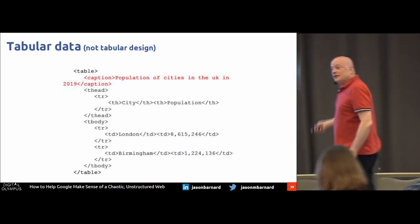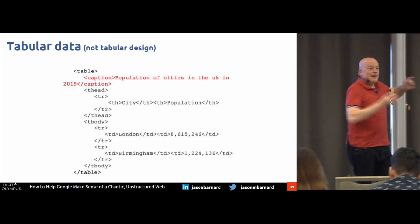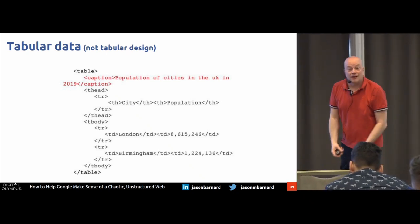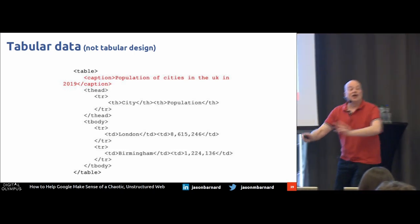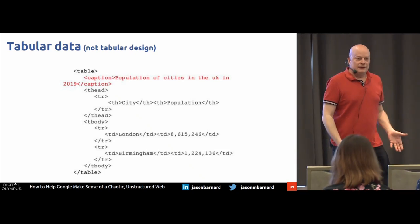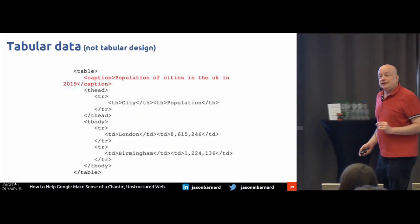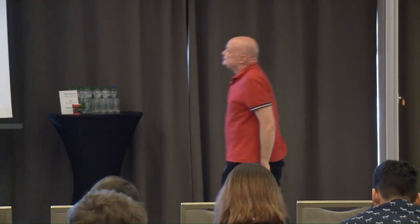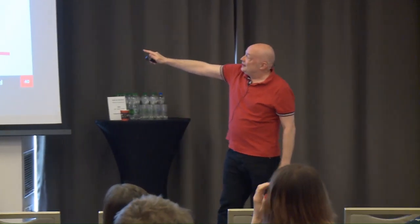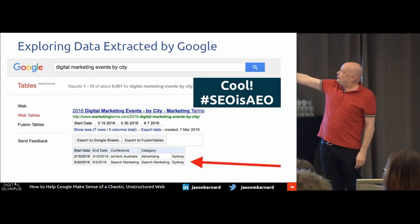Google had to develop a system to throw design tables to one side because they weren't structured data. So if you have tables on your site for design, change them to divs — divs are there for design, tables are there for presenting data. Another handy hint: if you've got a table, describe it in text underneath. Two reasons: some people don't like reading tables, and it also confirms to Google that it has understood — and gives it a choice of how to present that data to users. Potentially you can have a table in one set of results and the text in another.